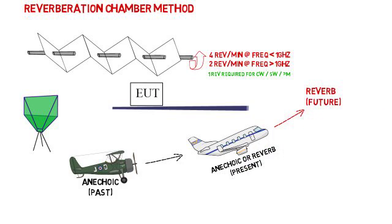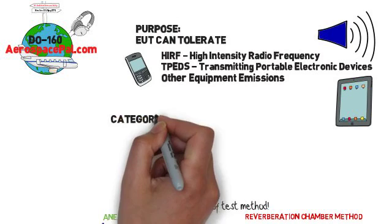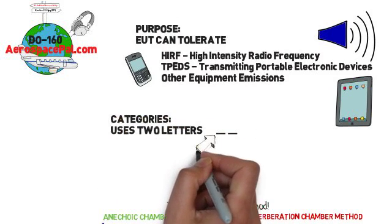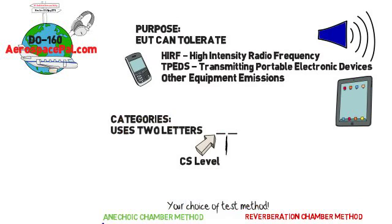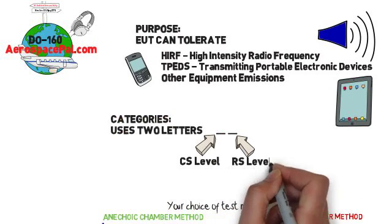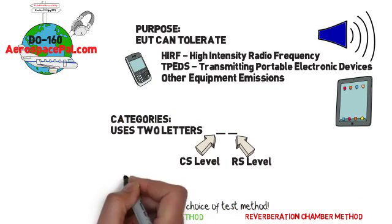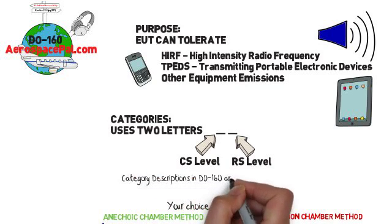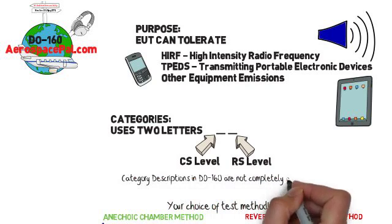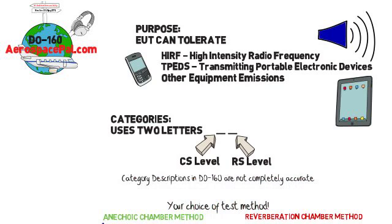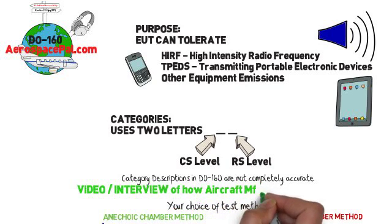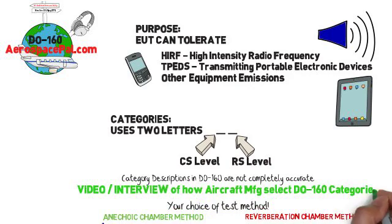Getting back to the category — Section 20 consists of two letters. The first refers to the conducted susceptibility level, and the second refers to the radiated susceptibility level. We'll be discussing radiated susceptibility in this video. Don't pay too much attention to the category descriptions in Section 20; just know that the criticality of the system and the system environment determine the test level. I promised to follow up with a video on how aircraft manufacturers select categories depending on the system and their location.